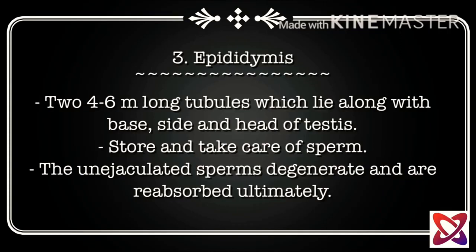The epididymis consists of four to six meter long tubules which lie along the base, side, and head of the testes. It stores and takes care of sperm. The un-ejaculated sperms degenerate and are ultimately reabsorbed by the epididymis.